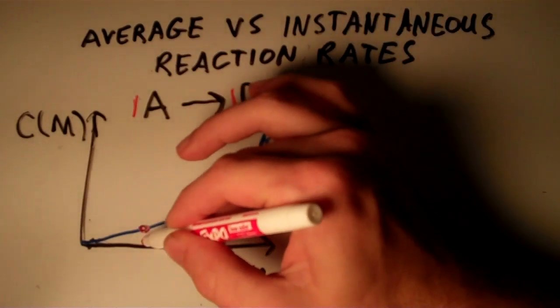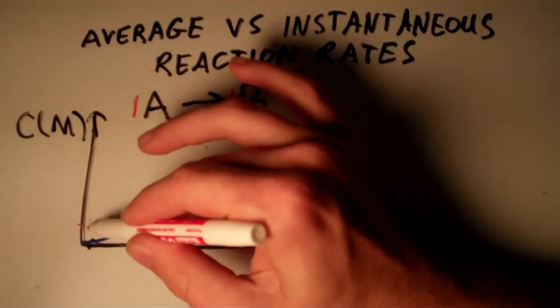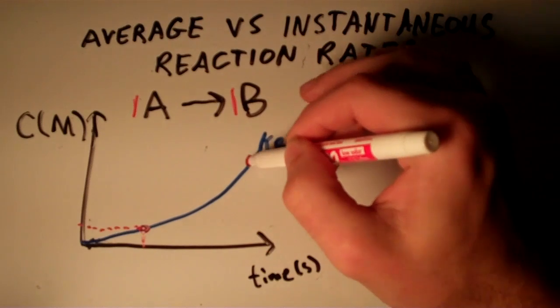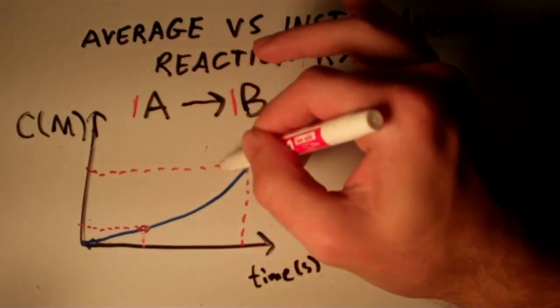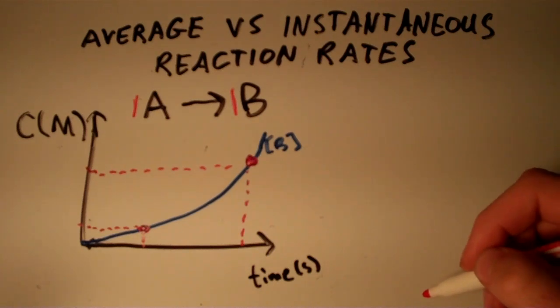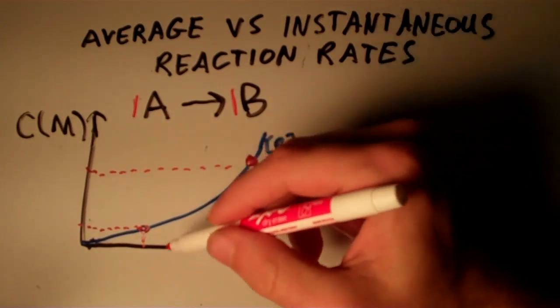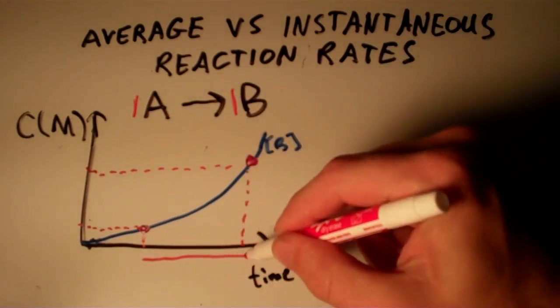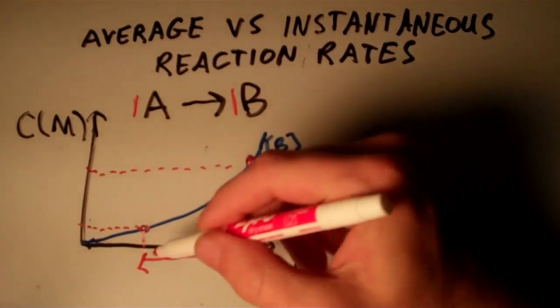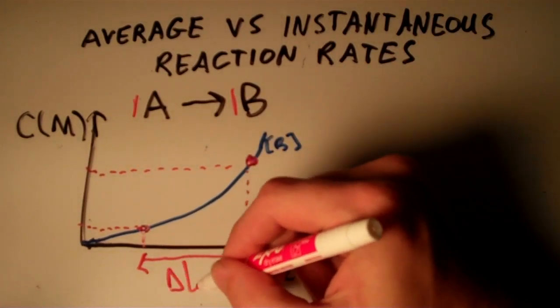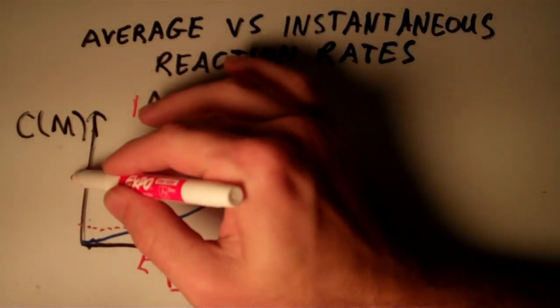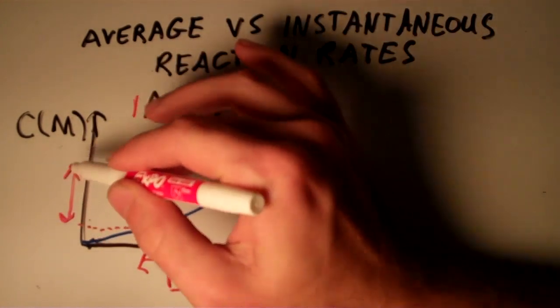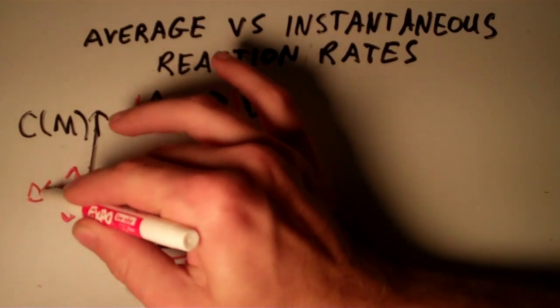This point has a time and a concentration associated with it, and so does this point. This distance down here we call that delta T, and this distance over here we call delta concentration of B.